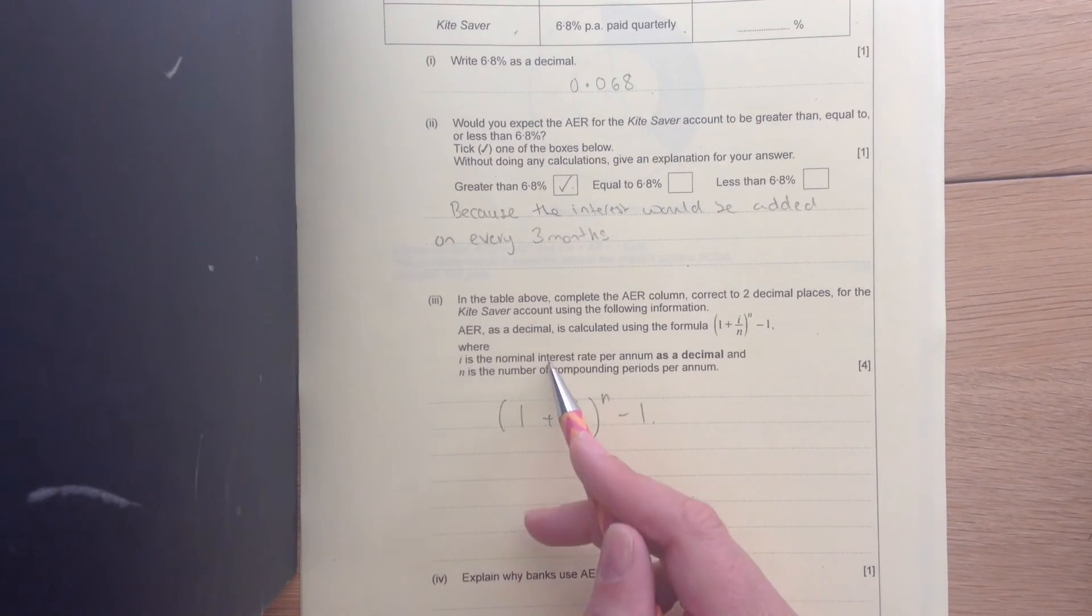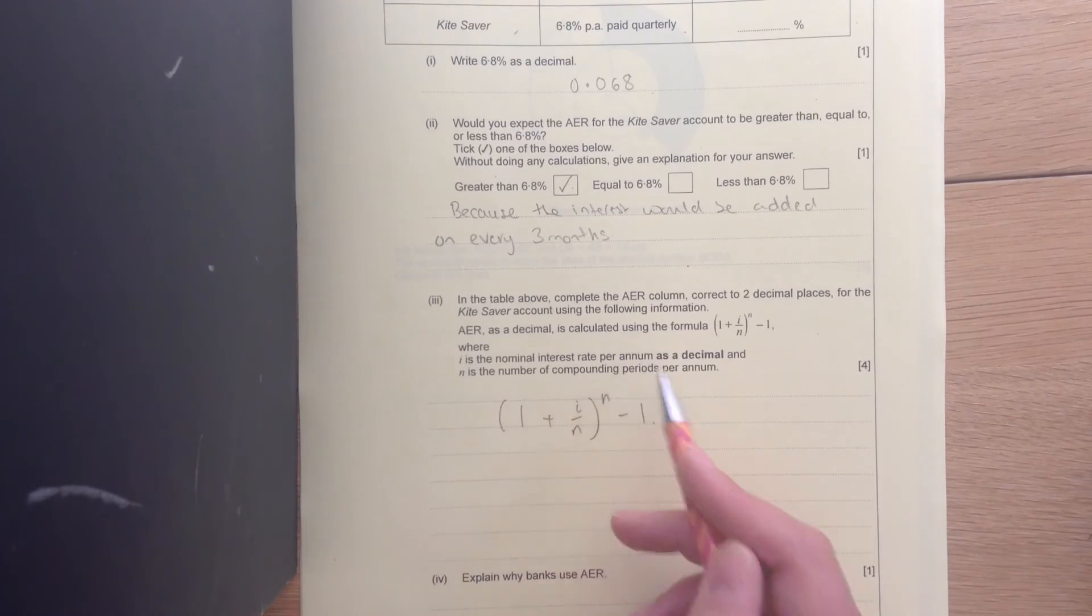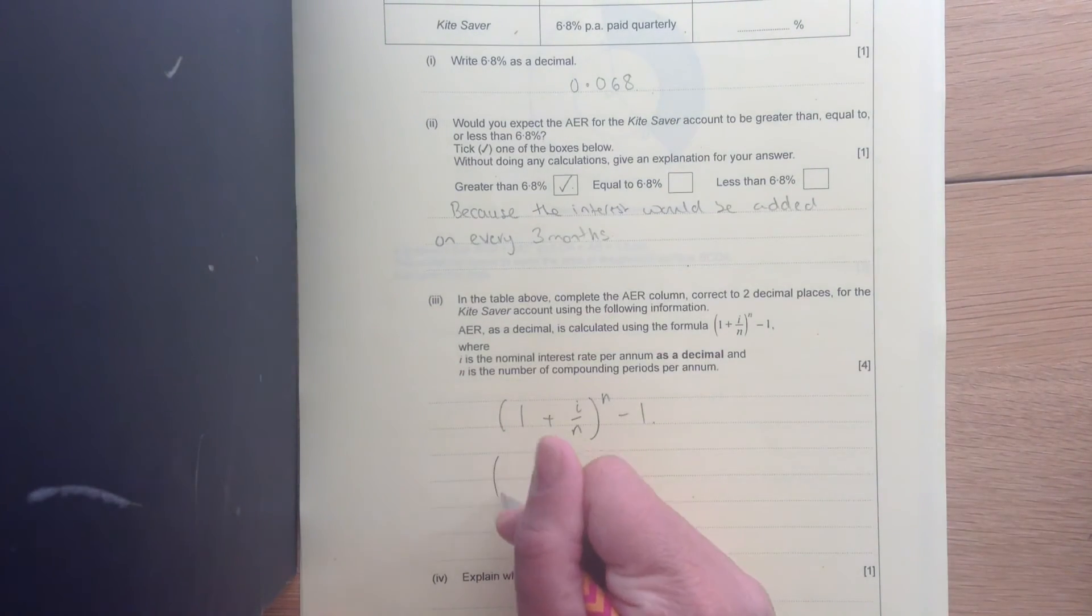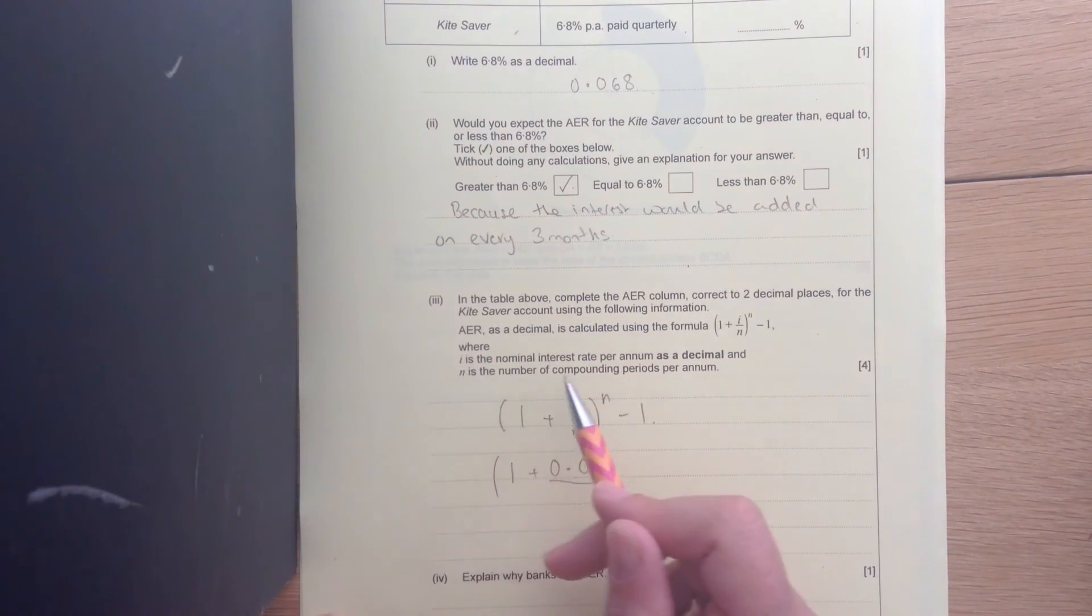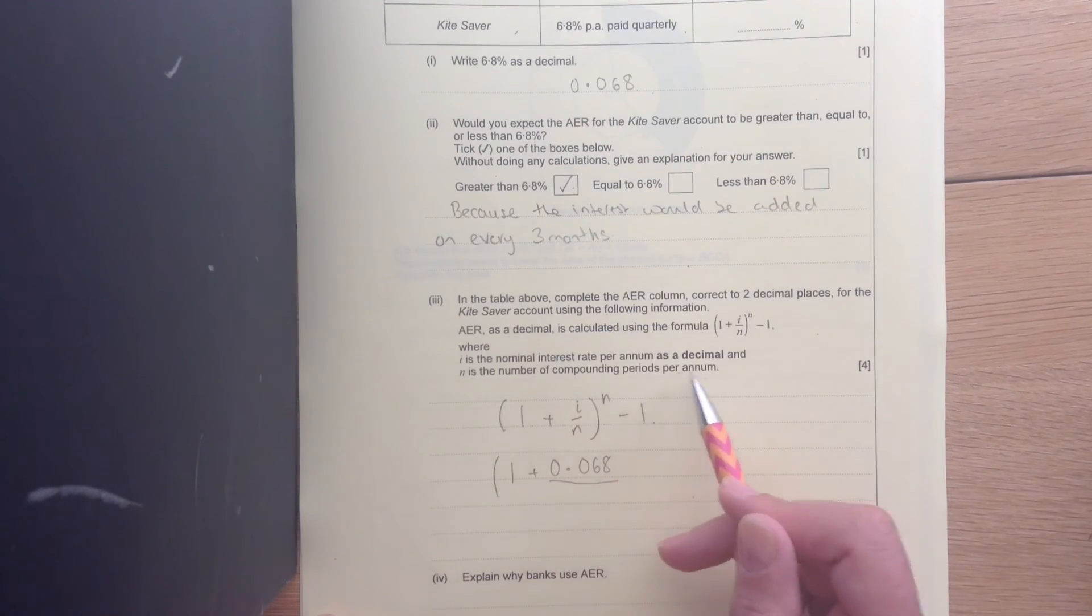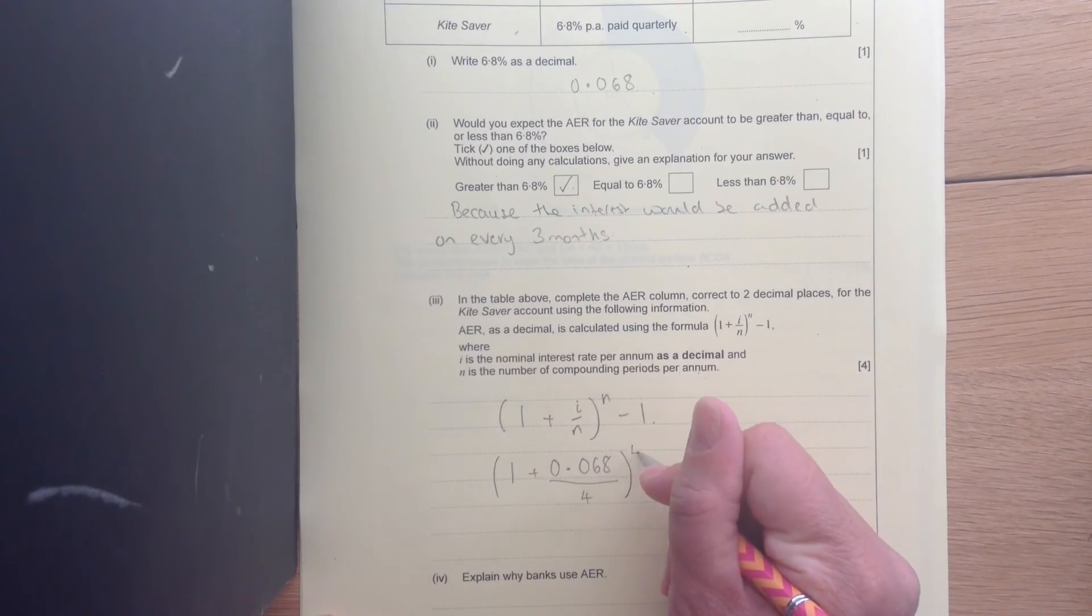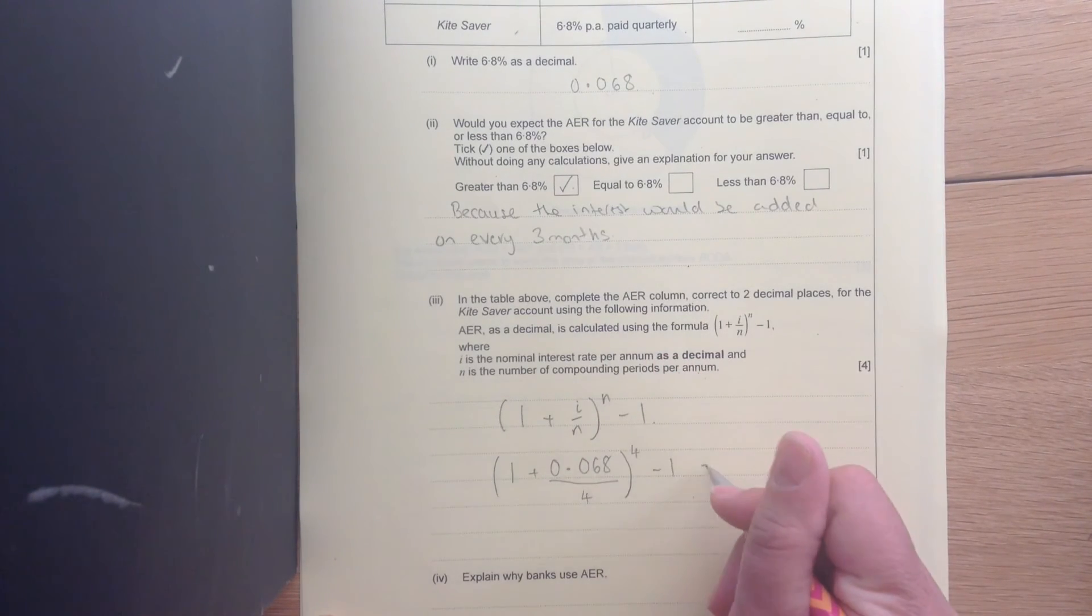i is a nominal interest rate per annum. It's a decimal. So we've got that right there. So we've got 1 plus 0.068 over n is the number of compounding periods per annum. So it's paid quarterly, so there's four of those. I'll put four here as well. Take away 1.